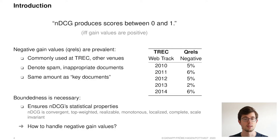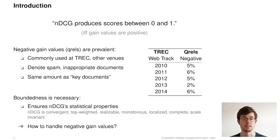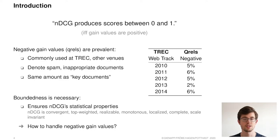On the other hand, boundedness to the 0–1 interval is necessary, since it ensures many statistical properties of NDCG. The question we address in this paper thus becomes: how can we handle negative gain values while keeping NDCG bounded to the 0–1 interval?